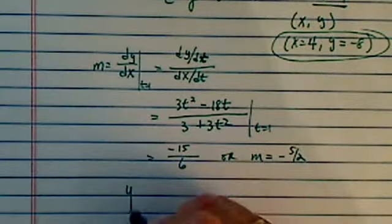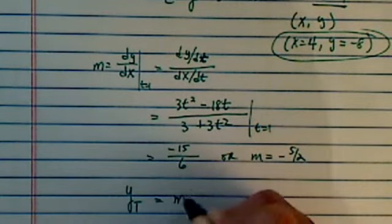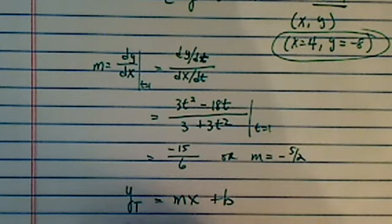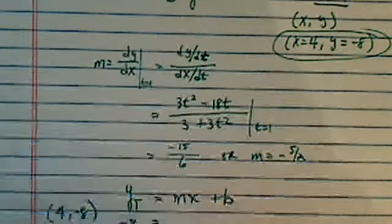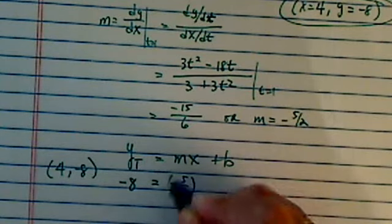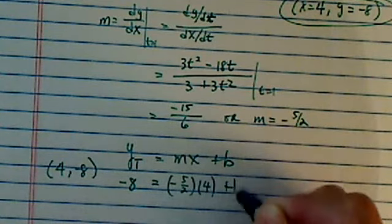Given this m, we're going to say y tangent line is equal to mx plus b, and my y is minus 8. Now remember the point I calculated earlier is 4 and minus 8. So I'm going to just plug it in here. minus 8, m is minus 5 over 2, x is 4, and I'm looking for b.